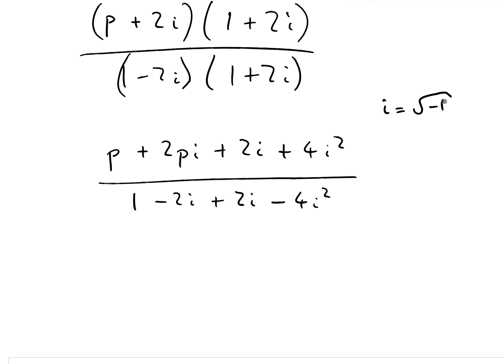What we have to remember here is that i is just the square root of minus 1 — that's the whole point of having an imaginary number, so you can take the square root of a negative number. Then i squared is just minus 1, because we square root minus 1 and then square it immediately, so we end up back at minus 1.